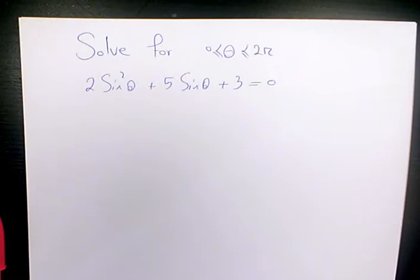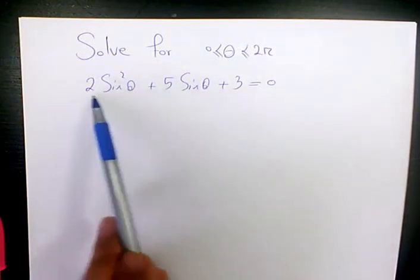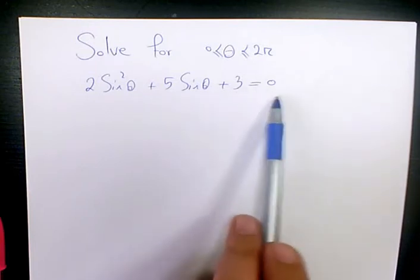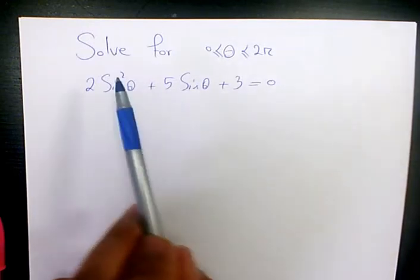In this video I want to show you how to solve this trigonometric equation, which is 2 sine squared theta plus 5 sine theta plus 3 equals zero. We need to solve it for theta between 0 and 2 pi.